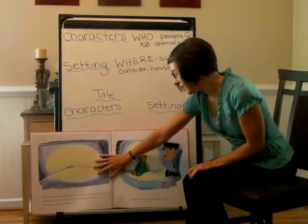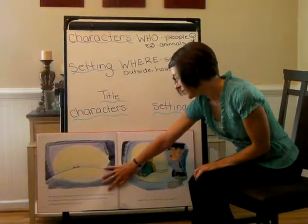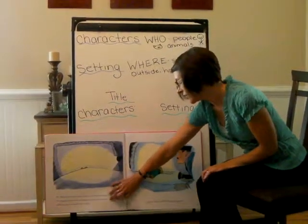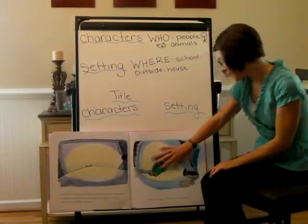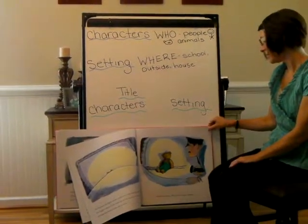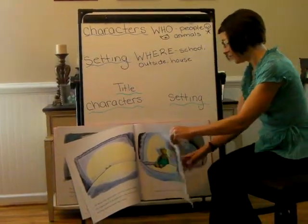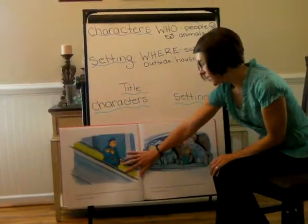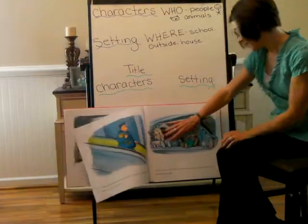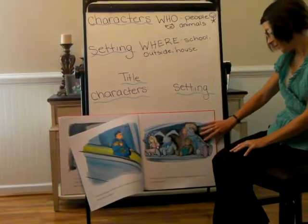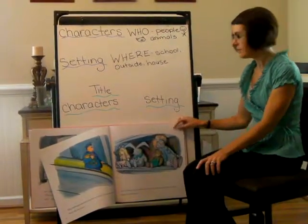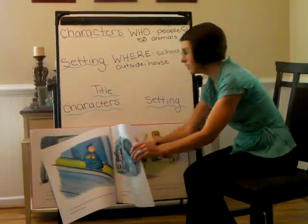He flashed his light under and over sofas and beds until he came to the biggest bed of all. And there, he saw two fuzzy brown ears sticking up from under the covers. 'Hello,' he said. 'How did you get upstairs?' The watchman tucked Corduroy under his arm and carried him down the escalator and set him on the shelf in the toy department with the other animals and dolls. Now, where is the story still taking place? Right, it's still in the store.